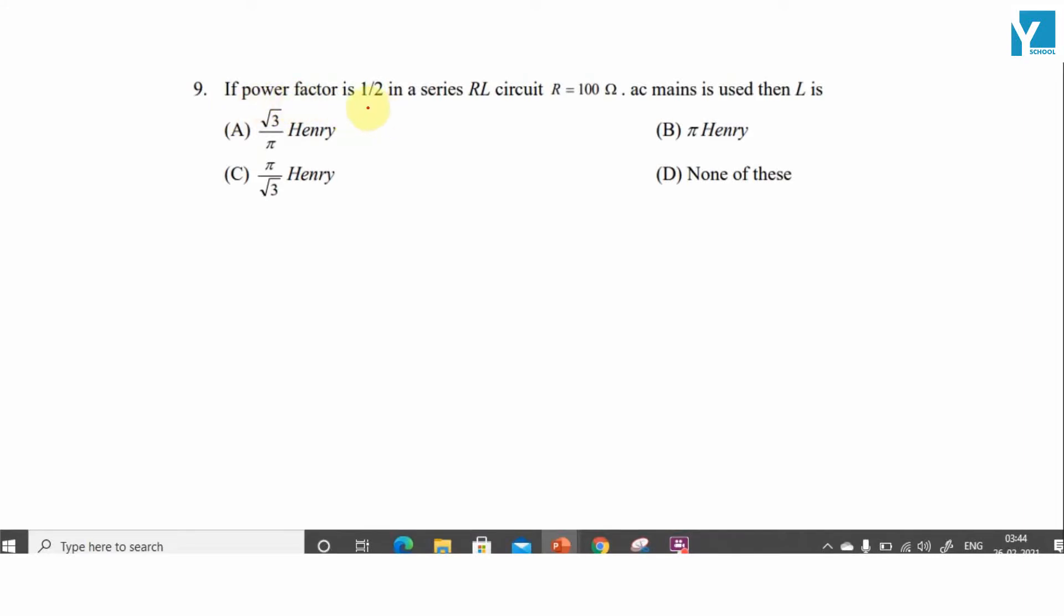If power factor is 1 by 2 in a series RL circuit and R is given to be 100 ohm, AC mains is used.